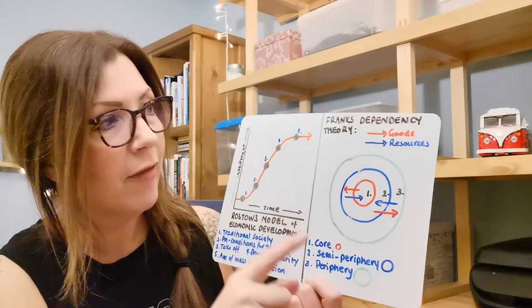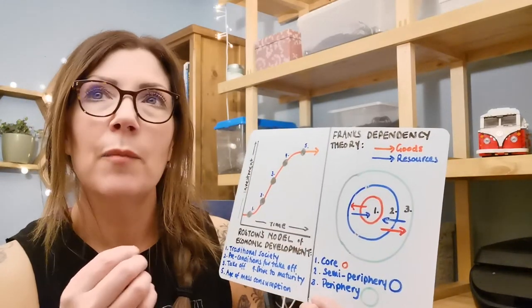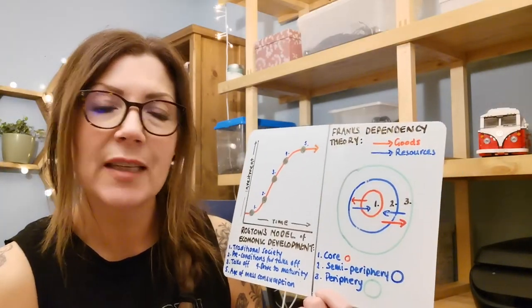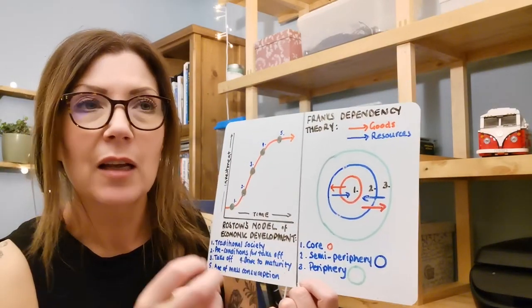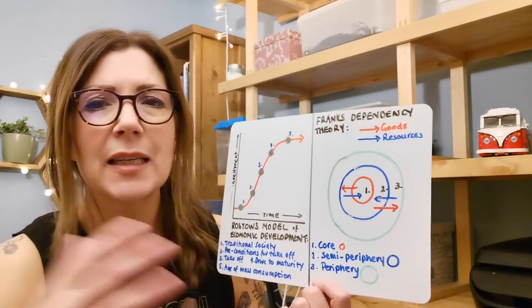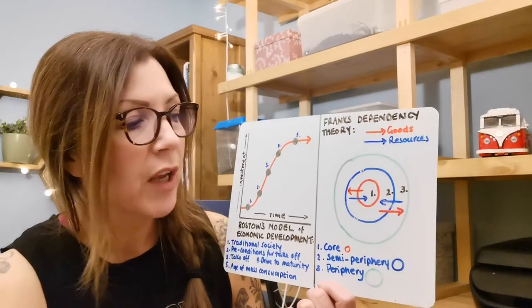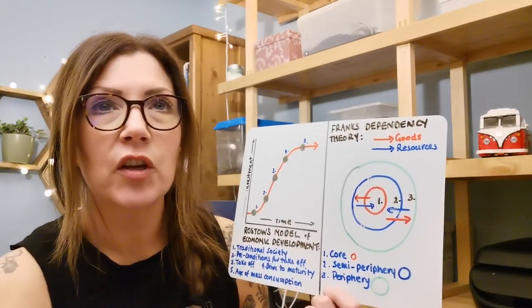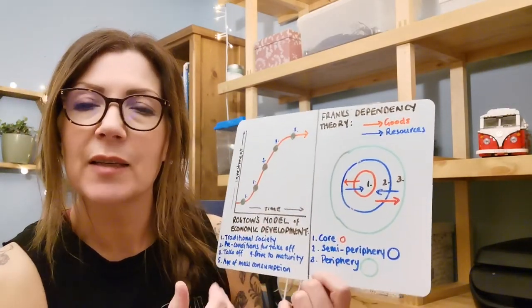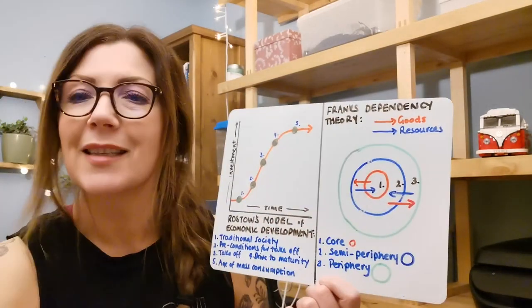The downside really of Frank's dependency theory is that we do have a rise of the BRICS, so some countries are able to get out of this poverty. That's a negative to Frank's dependency theory. Colonialism, although it's negative, and FDI and TNC investment can be seen as negative, it has helped places such as India and China, moreso China, to get out of that periphery and move into a semi-periphery or its own core. So there are downsides of both of these models, but that basically is Rostow's model of development and Frank's dependency theory.